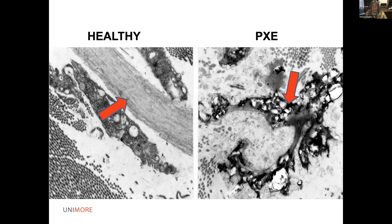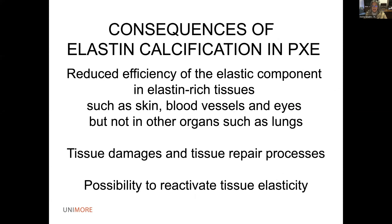This is a comparison of the structure of the elastic component. The gray amorphous structure highlighted by the red arrow shows healthy individuals. Compare that structure — which is completely different — to the skin of a PXE patient. The size and shape of the fibers is completely modified, and there are many mineral precipitates inside the fibers.